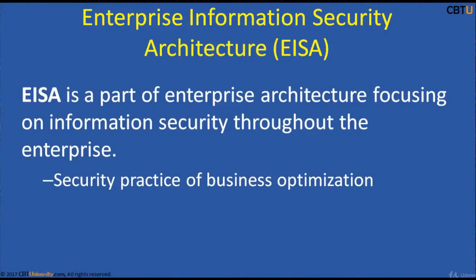Enterprise Information Security Architecture. This is part of Enterprise Architecture focusing on information security throughout the enterprise. EISA is the practice of applying a comprehensive and rigorous method for describing current and future structure and behavior for organizational security processes, information security systems, personnel and organizational subunits, so that they can align with the organization's core goals and strategic direction.